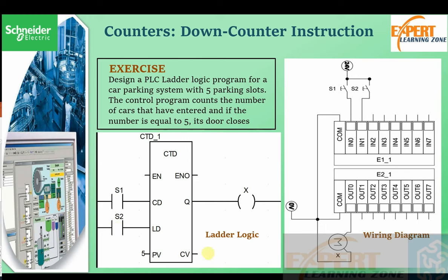Before decrementing, we press S2 so that the value 5 is transferred to CV (current counter value). Once transferred, pulse signals on S1 will progressively decrement CV. When CV becomes zero or less, output X will be latched. Now let's jump into the software to program that.